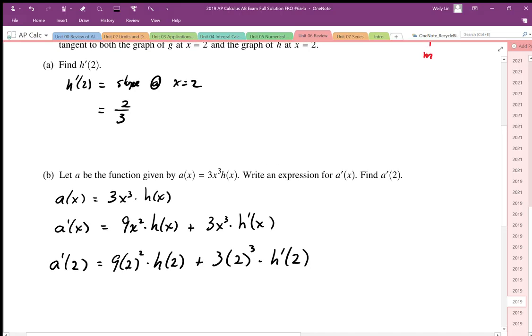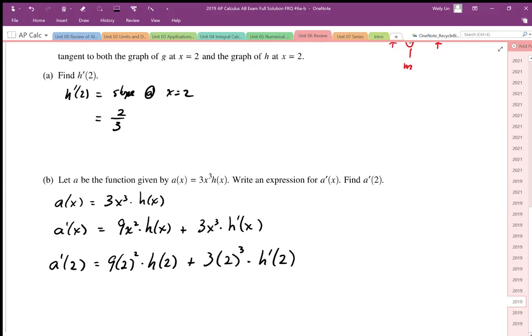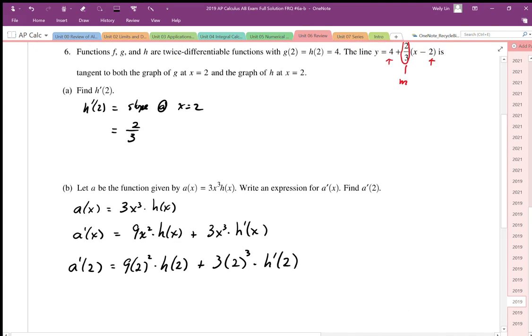If we take a look at the original question it tells us that h(2) is equal to 4. So I'm going to replace that with 4. We also know that h prime of 2 we've worked out here, h prime of 2 is equal to 2/3. So then I'm going to replace that.